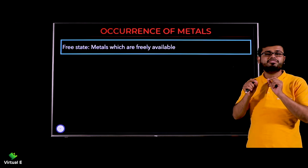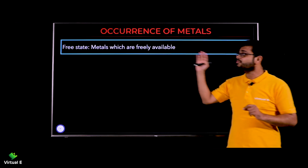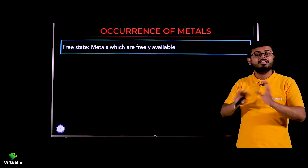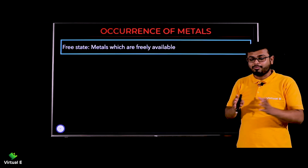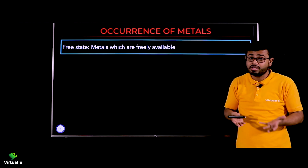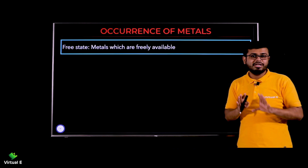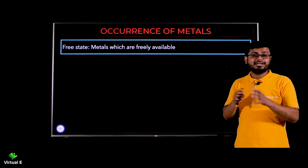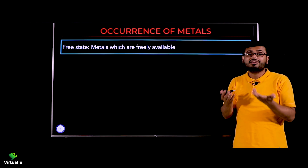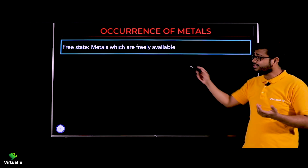Before we discuss the core idea, let's discuss a few terms. First: free state. Free state means a metal that is freely available — you can get it in raw form directly. For example, gold — we can get it directly. But most other elements are not like that because they react with others.